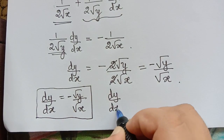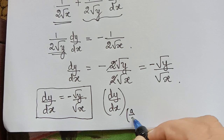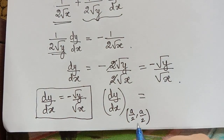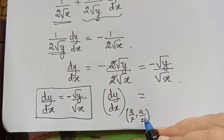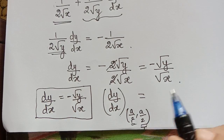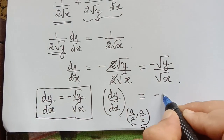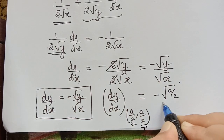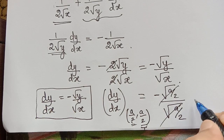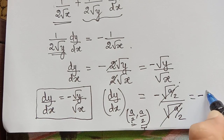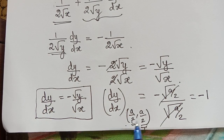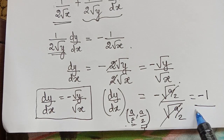This is dy/dx. But we want dy/dx at the point (a/2, a/2). So we replace x with a/2 and y with a/2: dy/dx = −√(a/2) / √(a/2). These cancel and we get dy/dx at (a/2, a/2) = −1.